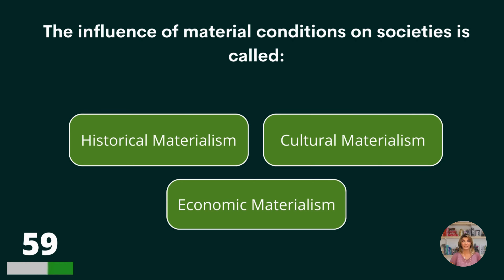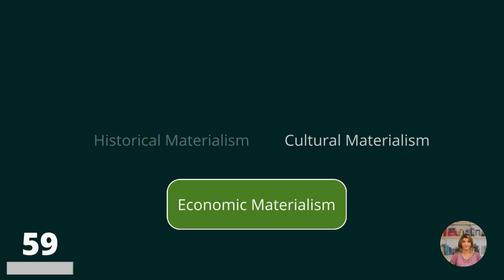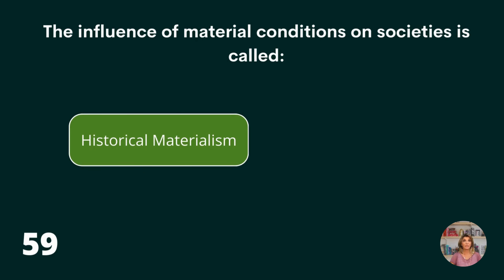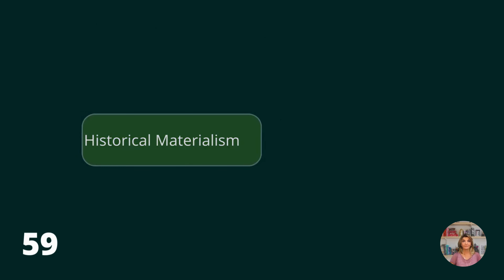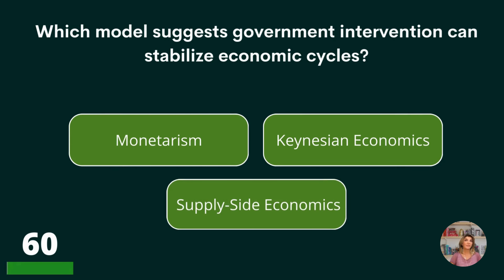The influence of material conditions on societies is called historical materialism, cultural materialism, or economic materialism? Historical materialism.